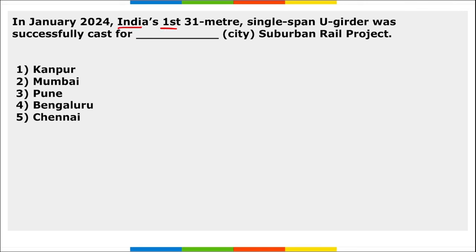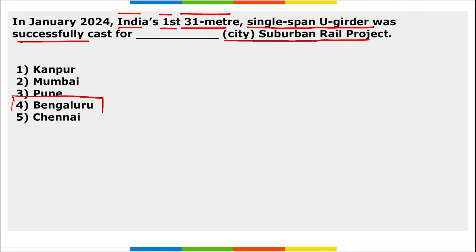India's first 31-meter single-span U-girder was successfully cast in January for Bangalore city's suburban rail project. These girders will be used for the construction of the elevated section of around 8 kilometers from Hebbal to Yashwantpur — part of the Corridor 2 of BSRP, which is the Bangalore Suburban Rail Project.